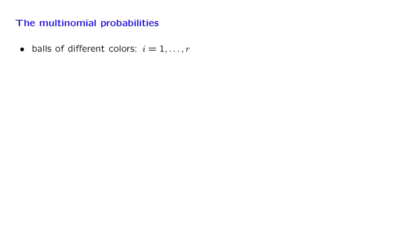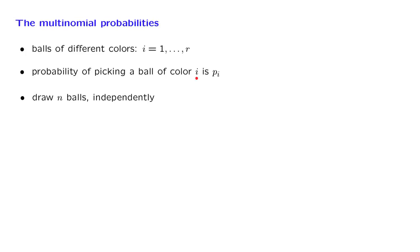In this segment, we will discuss the multinomial model and the multinomial probabilities, which are a nice generalization of the binomial probabilities. The setting is as follows. We are dealing with balls, and the balls come in different colors — there are r possible different colors. We pick a ball at random, and there is a certain probability p_i that the ball we picked has the i-th color. We repeat this process n times independently, and each time we get a ball that has a random color.